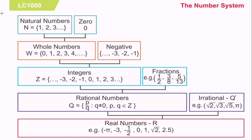Now, rational numbers are divided into two: integers and fractions. Integers go from zero to positive numbers and zero to negative numbers. For fractions, you can identify those — for example, 1 half, 3 fourths, or 5 thirds. Those are the fractions.